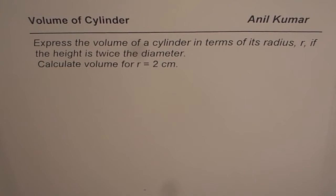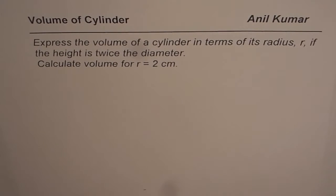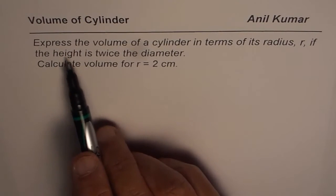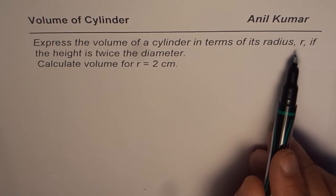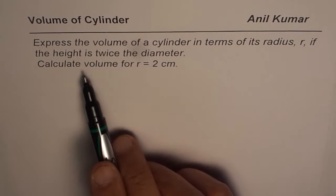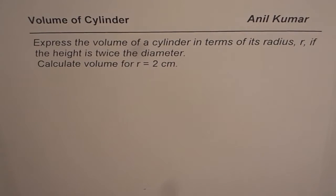I am Anil Kumar and in this video we will learn how to write a formula in one variable. The question here is: express the volume of a cylinder in terms of its radius r if the height is twice the diameter.